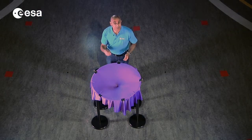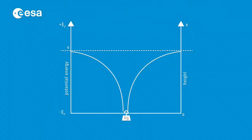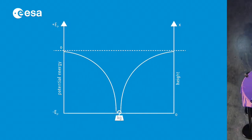This gravity well is a potential energy model of a gravitational field, and we're going to be using it to illustrate the path of an object orbiting the Sun.